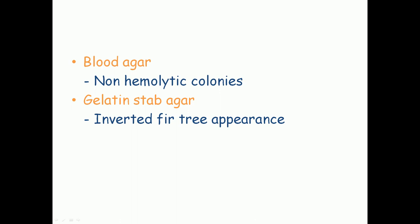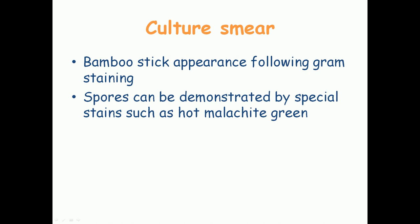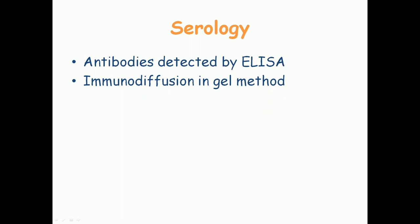On blood agar, Bacillus anthracis produces non-hemolytic colonies. On gelatin stab agar, it produces an inverted fir tree appearance — most of the reaction occurs at the top of the tube and decreases toward the bottom, giving the shape of an inverted fir tree. In the culture smear, bamboo stick appearance is still visible following gram staining, and spores can be demonstrated using special stains such as hot malachite green.